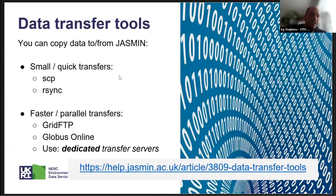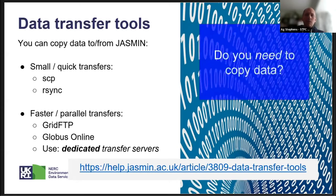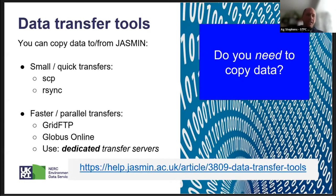For data transfer, standard command-line tools such as SCP and RSync allow you to copy data to and from Jasmine. We also have a dedicated high-performance transfer server where you can use GridFTP or Globus Online for greater bandwidth. One thing we always want to ask is: do you need to copy data? A lot of the storage on Jasmine is mounted across all systems, so if you're working on one part you may already have access to the same data elsewhere. If data is in the CEDA archive, you can read it directly without copying.